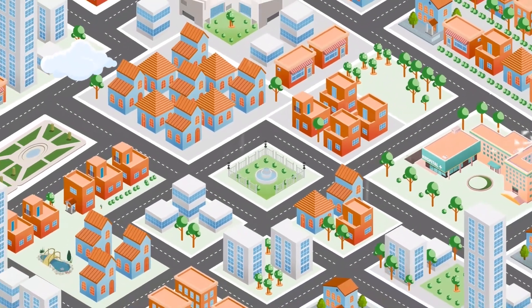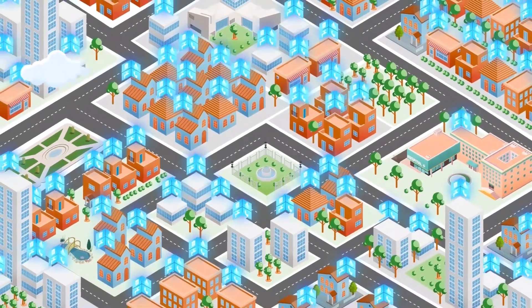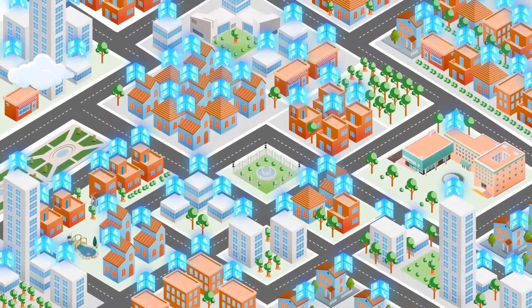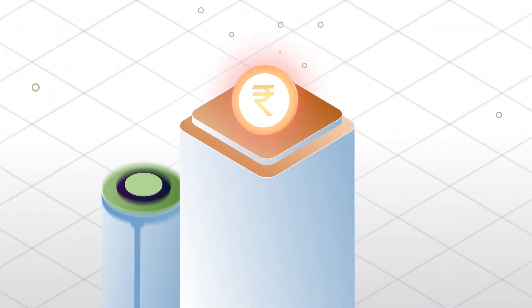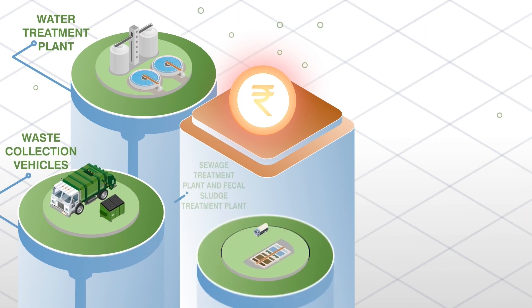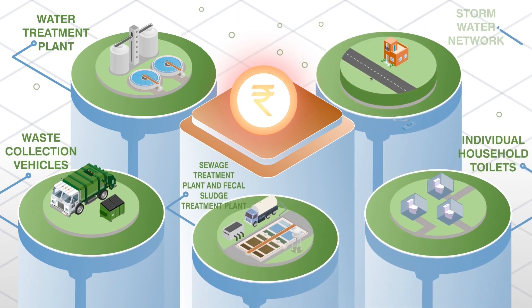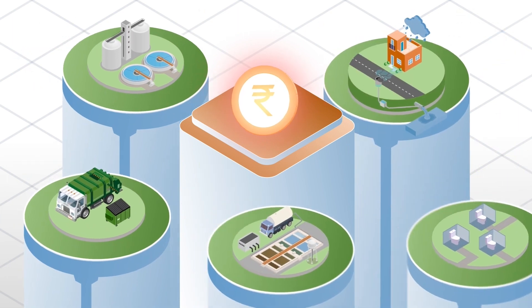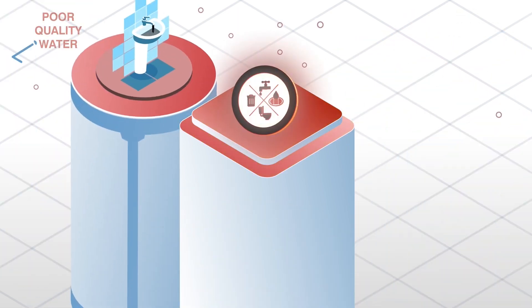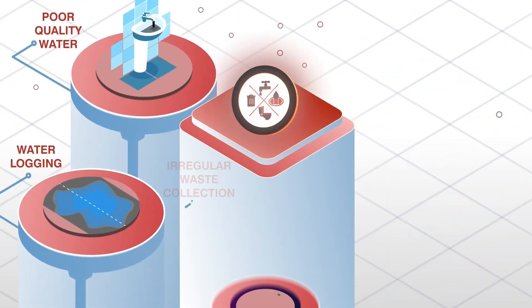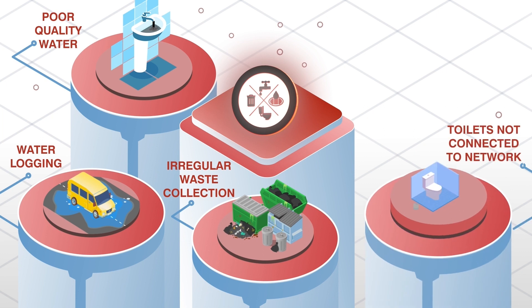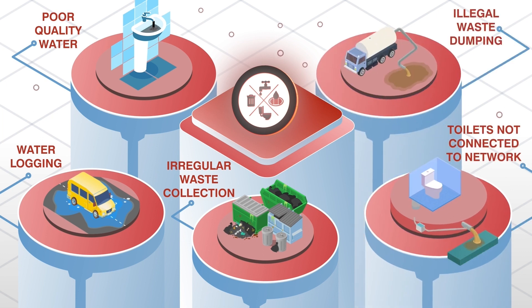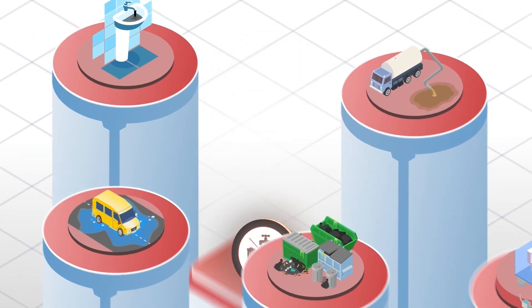In urban India, access to water and sanitation is widespread. Huge investments are made to build urban infrastructure. But despite such investments, services for the people are poor in many cities.